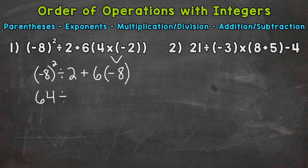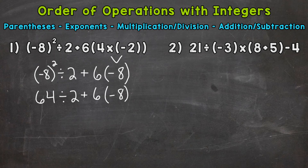Bring down everything we did not use. We're breaking this problem down step by step. Do we have any parentheses? No. Any exponents? No. Any multiplication or division? Yes, we have both: 64 divided by 2 and then 6 times negative 8. Whenever you have a number right up against parentheses, it means multiplication. Multiplication and division are on the same level, so we solve from left to right. So 64 divided by 2 comes first, giving us 32. Bring down everything we did not use.